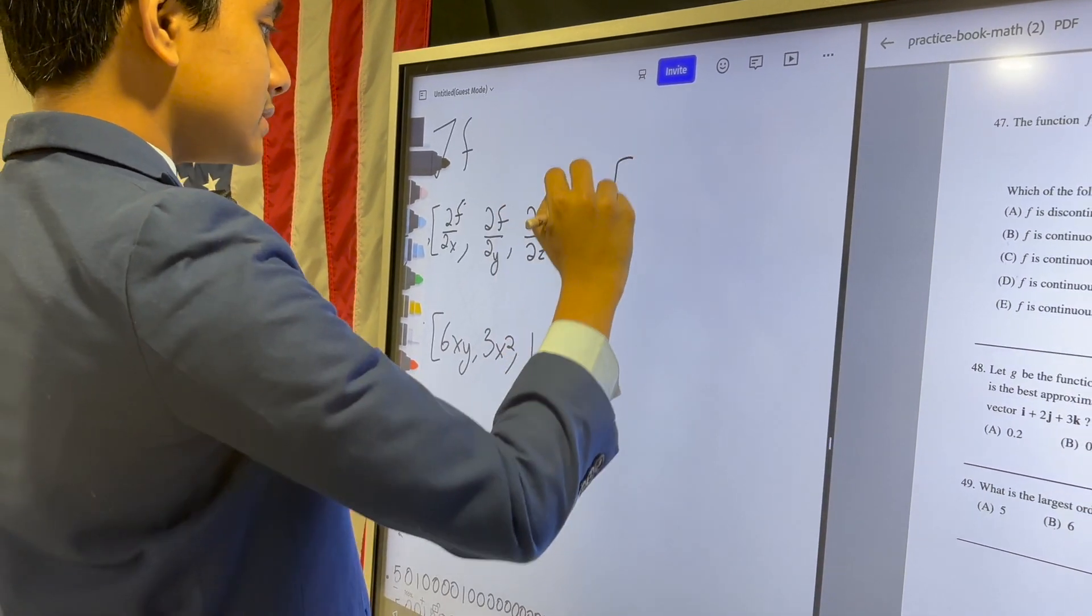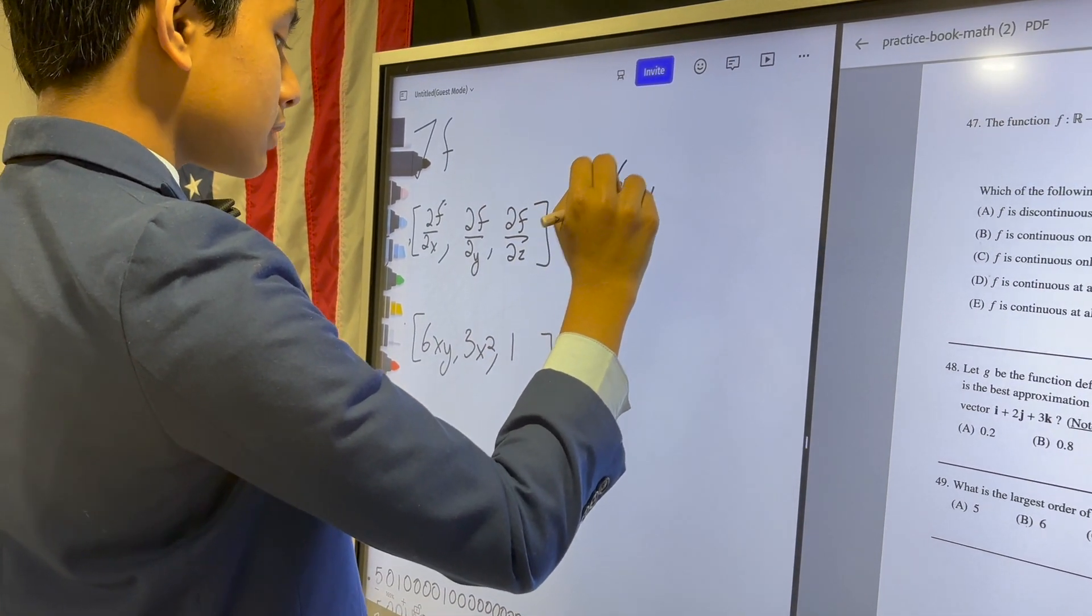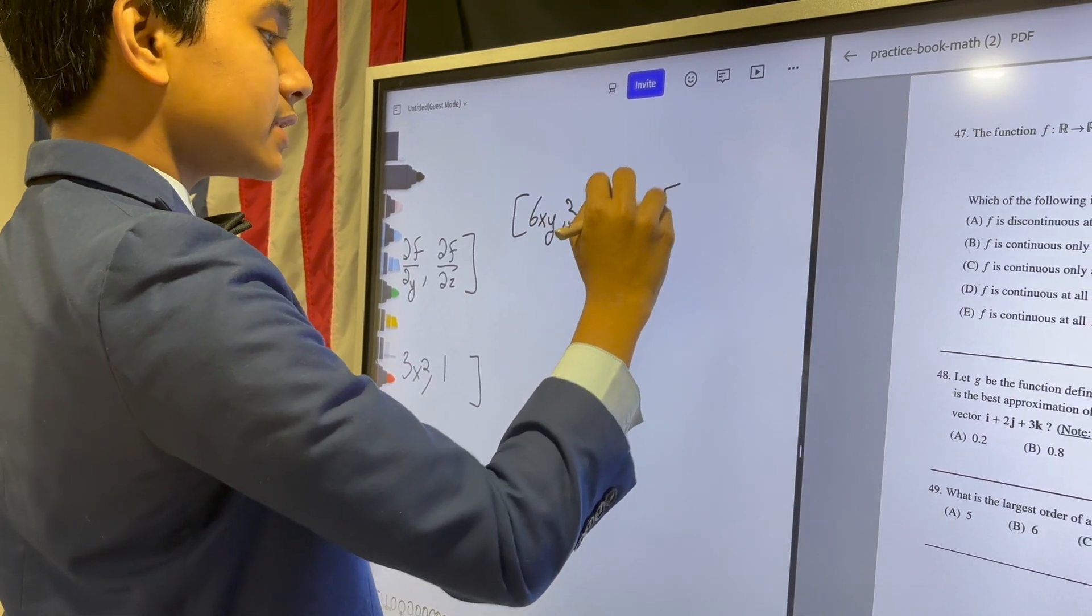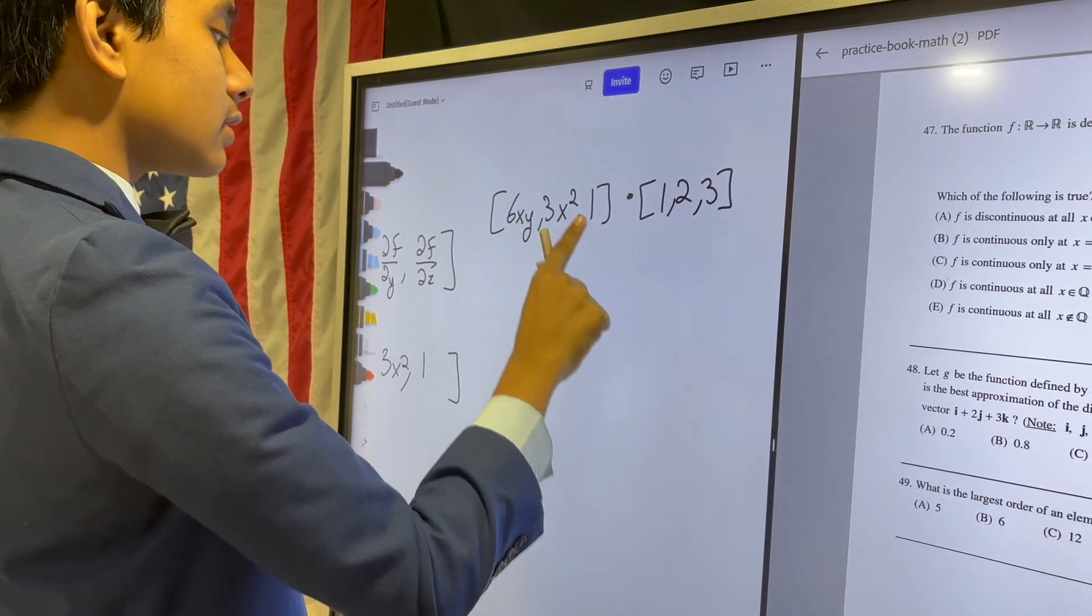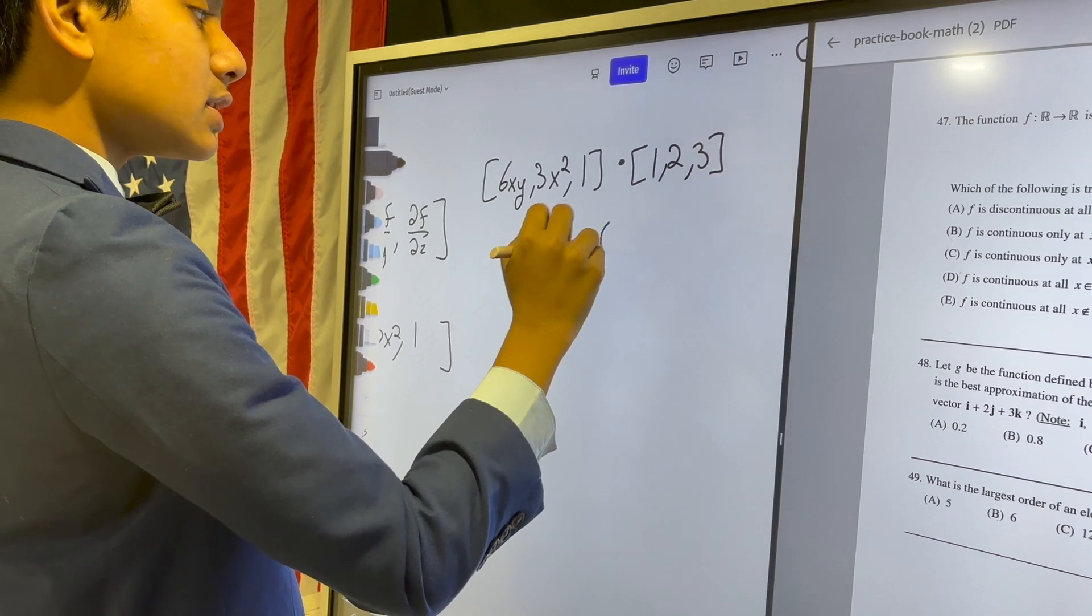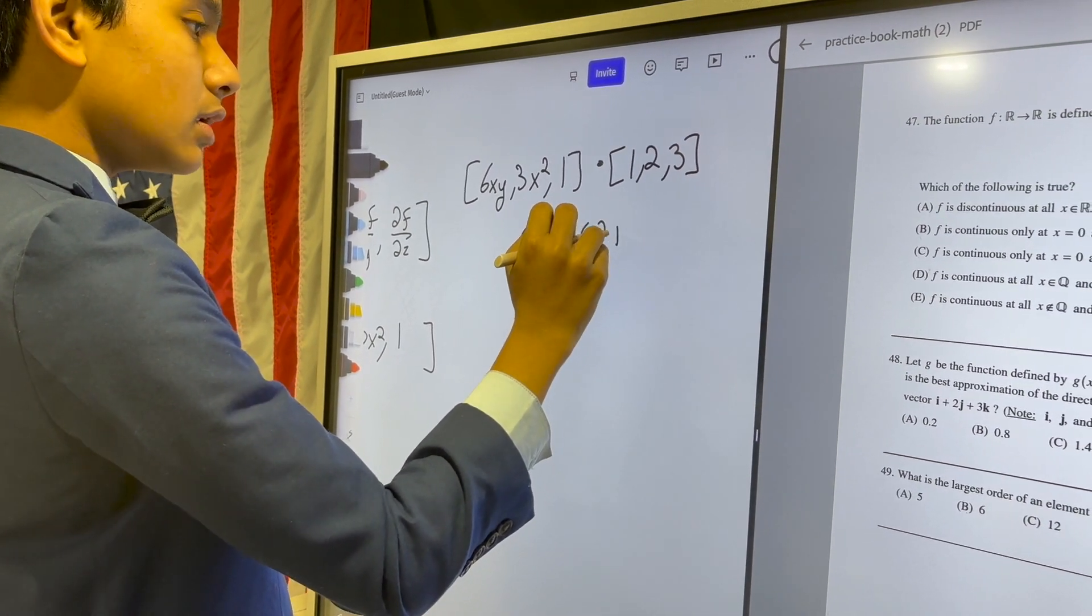So now, all we have to do is take the dot product of this with the direction in which we are taking the directional derivative. We get 6xy plus 6x² plus 3.